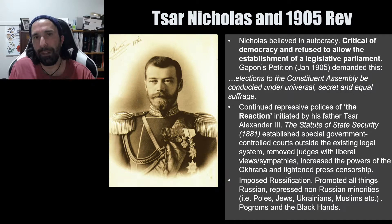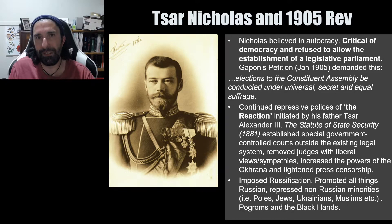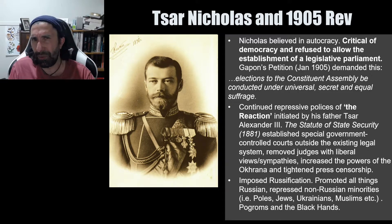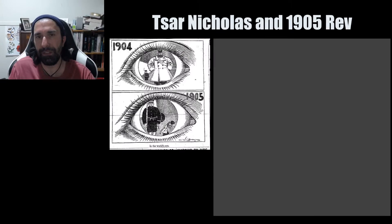Another repressive policy continued by Tsar Nicholas the Second was Russification — the policy of making everybody in Russia speak Russian and follow the Orthodox religion. It repressed all non-Russian languages, minorities, and religions such as Islam, Judaism, and Catholicism. The Russians themselves only made up about 55% of the total population; the other 45% were ethnic minorities including Poles, Jews, Ukrainians, and Central Asian Muslim groups such as the Kazakhs.